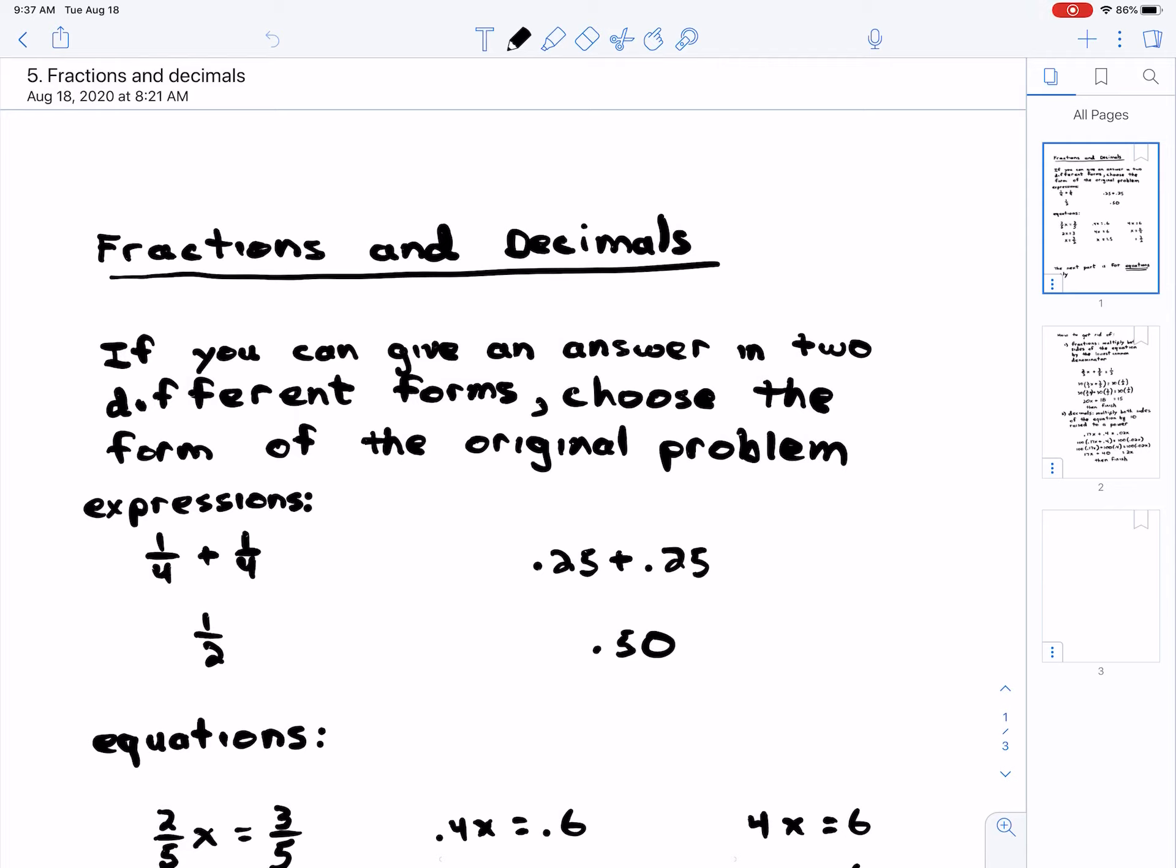So for example, if you have an expression, one-fourth plus one-fourth is two-fourths, which is one-half. The answer is not 0.5, it's one-half. Pretty much the same problem: 0.25 plus 0.25 is 0.50. It's not a half.